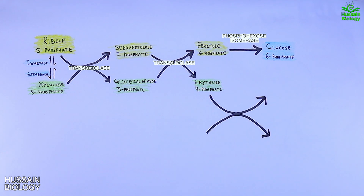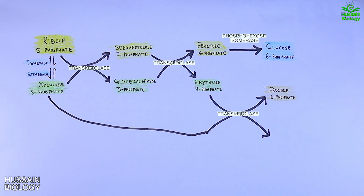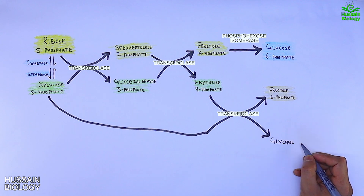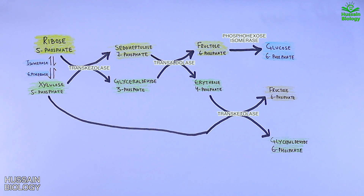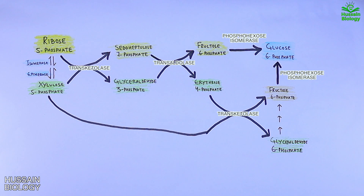On the other hand, erythrose-4-phosphate is acted upon by transketolase enzyme and converts into fructose-6-phosphate. Also, xylulose-5-phosphate is acted upon by the same transketolase enzyme, which converts it into glyceraldehyde-3-phosphate. This molecule, glyceraldehyde-3-phosphate, in a series of reactions gets converted into fructose-6-phosphate, which is then acted upon by phosphohexose isomerase and converted into glucose-6-phosphate again.